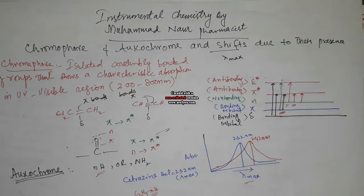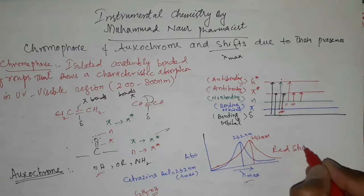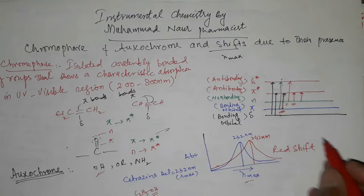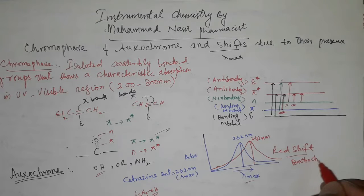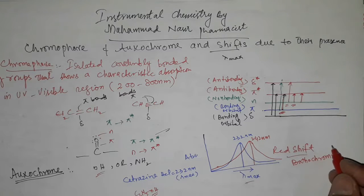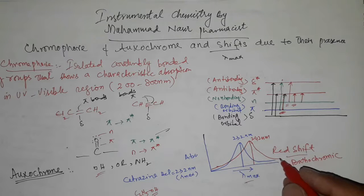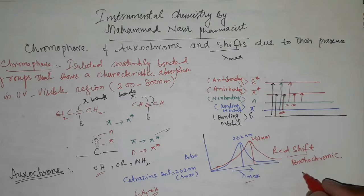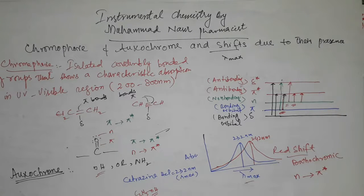If cetirizine hydrochloride must be dissolved in water but instead someone has dissolved it in ethanol — which contains the hydroxyl group, an auxochrome — the absorption maximum will shift from 232 nanometers toward a longer wavelength, for example to 242 nanometers. When the absorption maximum is shifted toward a longer wavelength, this is called a red shift or bathochromic shift. This may occur due to a change in solvent or due to the presence of an auxochrome impurity. The transition taking place in such shifts is the n to pi star transition.